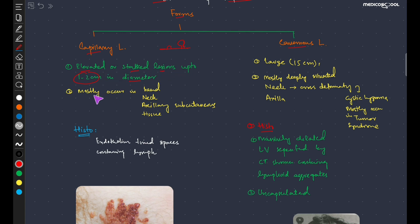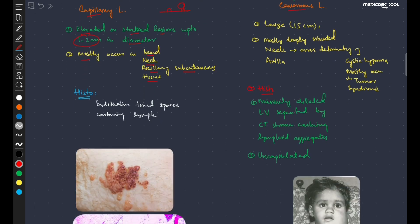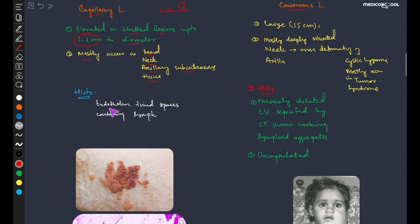It mostly occurs in places like the head, neck, and axillary subcutaneous tissue. If we examine the slides histopathologically, we can see endothelium-lined spaces containing lymph.